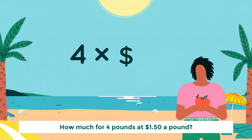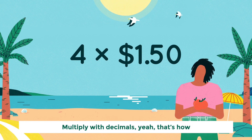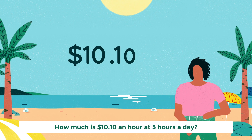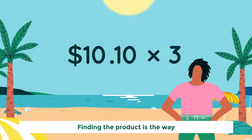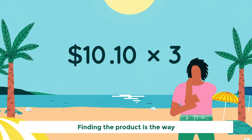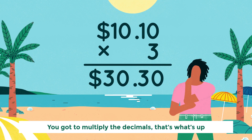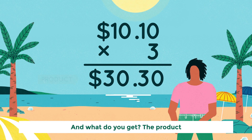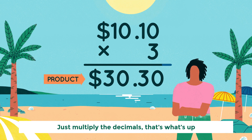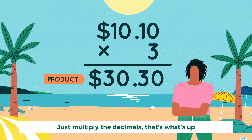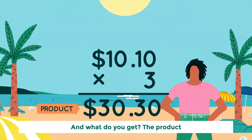How much for four pounds at $1.50 a pound? Multiply with decimals, yeah that's how. How much is $10 an hour at three hours a day? Finding the product is the way. You gotta multiply the decimals, that's what's up. And what do you get? The product.